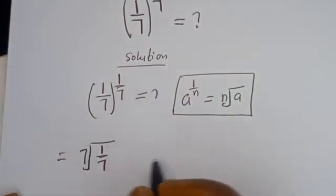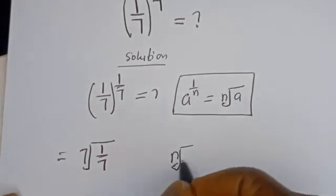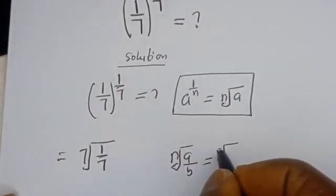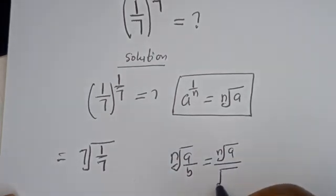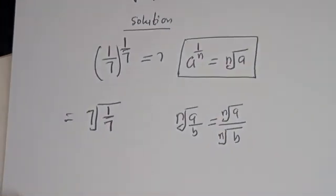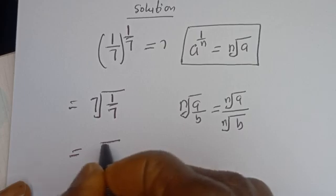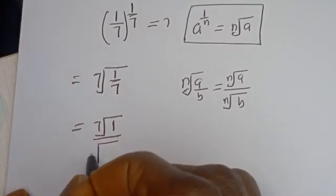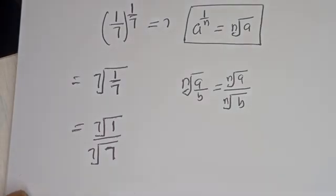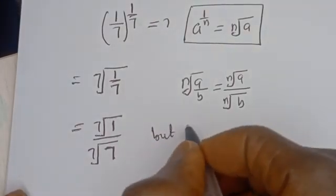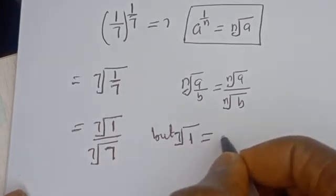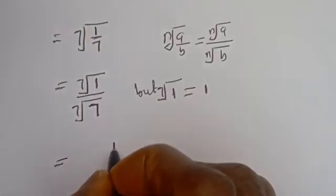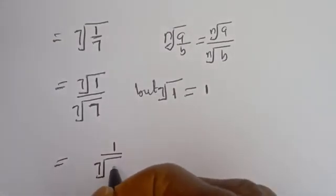Also, if you have the nth root of a over b, this is equal to the nth root of a divided by the nth root of b. Then this can be written as the 7th root of 1 divided by the 7th root of 7. But the 7th root of 1 is equal to 1, so we have 1 over the 7th root of 7.